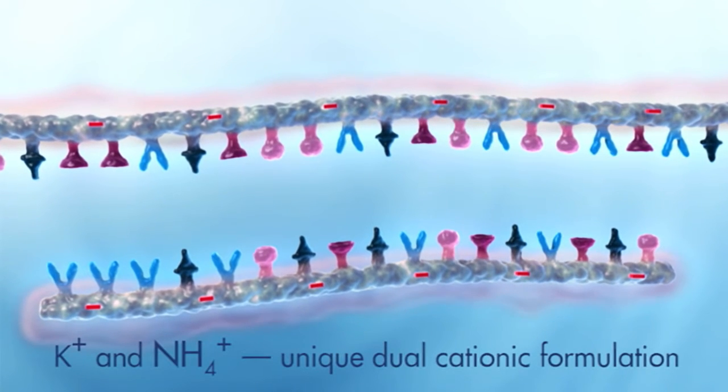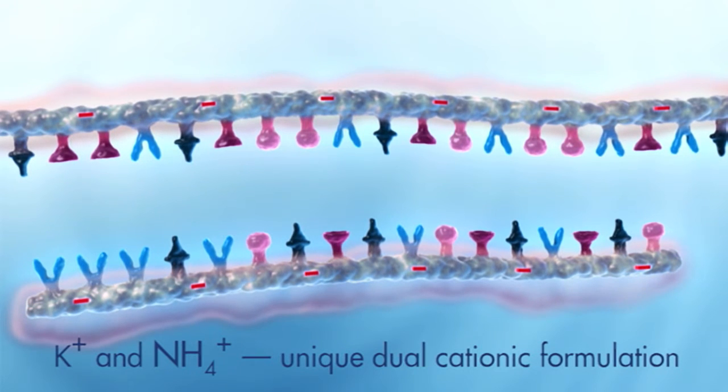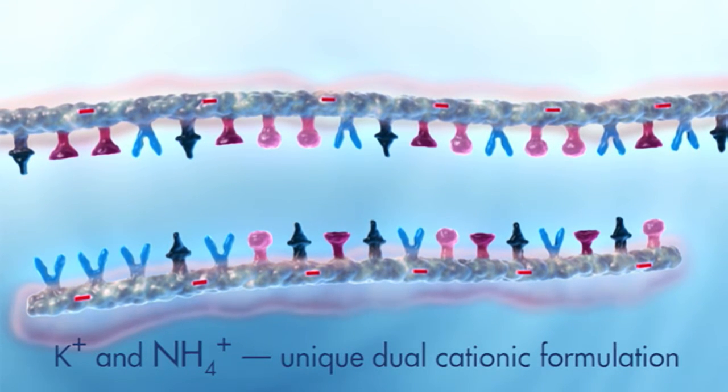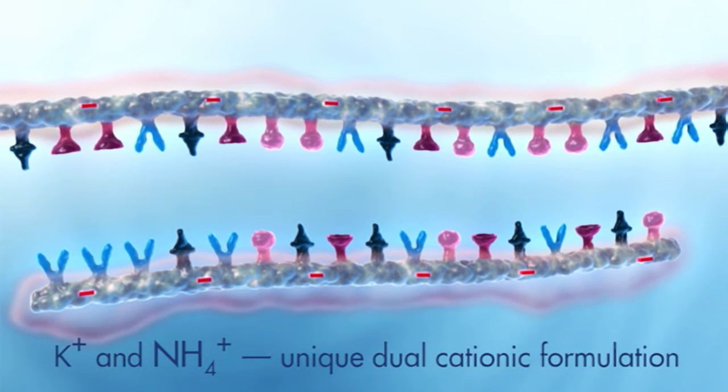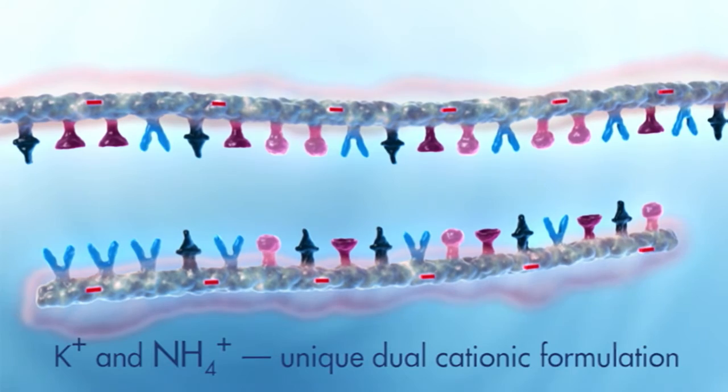QIAGEN has developed a PCR buffer with a unique dual cationic formulation. It consists of a balanced combination of K+ and NH4+ cations and has a strong influence on PCR performance.